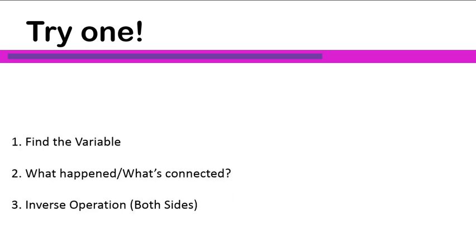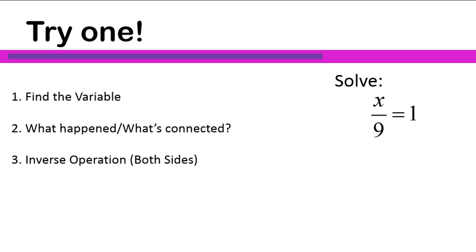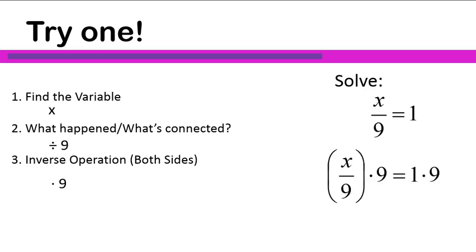Now it's time to try one. Here are the three steps, and here is our equation: x over 9 is equal to 1. Go ahead and give that one a shot. When we're solving, we always find our variable. x is our variable in this case, and it is being divided by 9. So the inverse would be to multiply both sides times 9. x divided by 9 times 9 — they cancel each other out, and we're left with x by itself on the left side. 1 times 9 is equal to 9, so x is equal to 9.